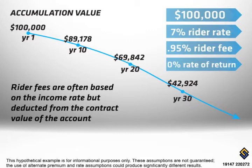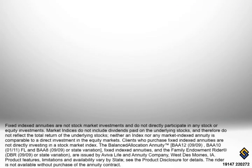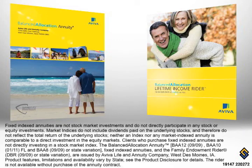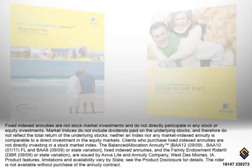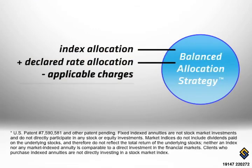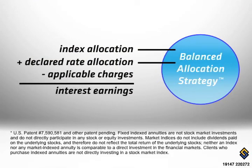To ensure that this doesn't happen to you, ask your insurance professional about the balanced allocation annuity with the balanced allocation lifetime income rider. The charges within the balanced allocation annuity can be categorized as a spread instead of a fee because the charges are only deducted from earnings and never the principal.